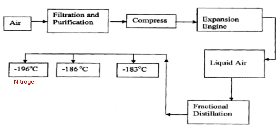The liquid air is heated in the fractional distillation chamber. The component with the lowest boiling point, which is nitrogen at negative 196 degrees Celsius, will distill off first, followed by argon, which has a boiling point of negative 186 degrees Celsius. And then lastly, oxygen is collected because it has the highest boiling point, which is negative 183 degrees Celsius.